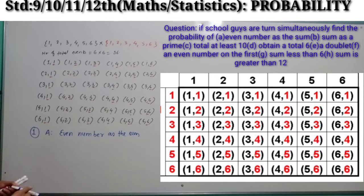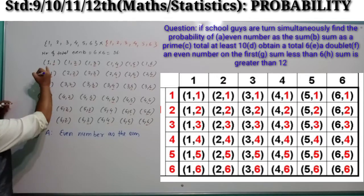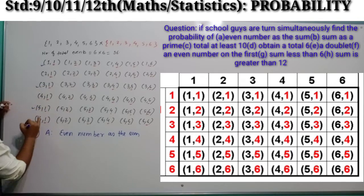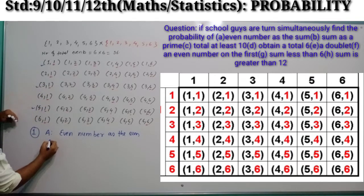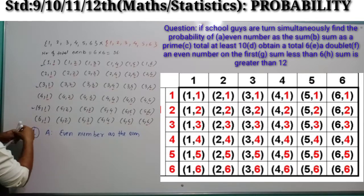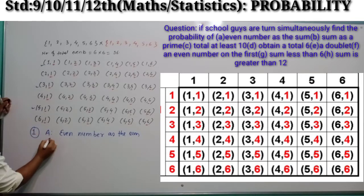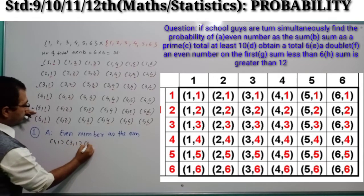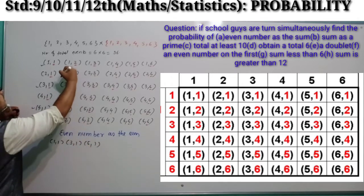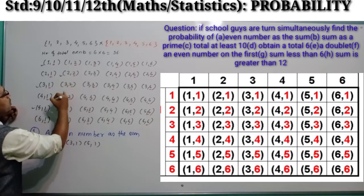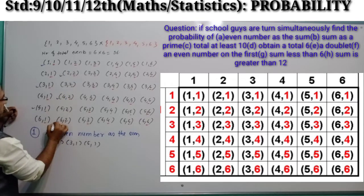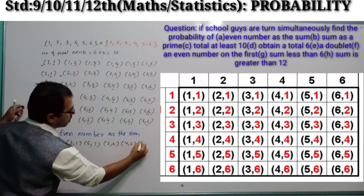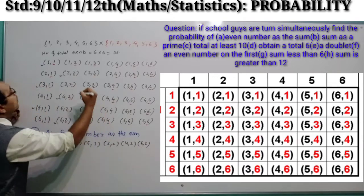So what even sums are we getting? From the first column: (1,1), (3,1), (5,1) — these give even sums. From the second column: (2,2), (4,2), (6,2). In odd columns you are getting 3 possibilities, and in the second column you are also getting 3 events.